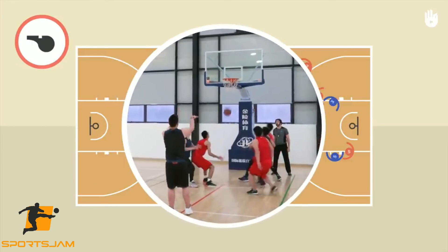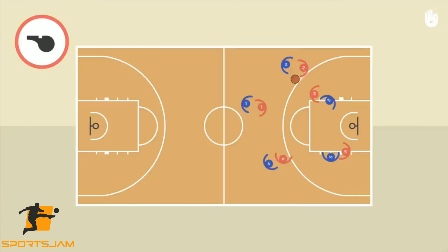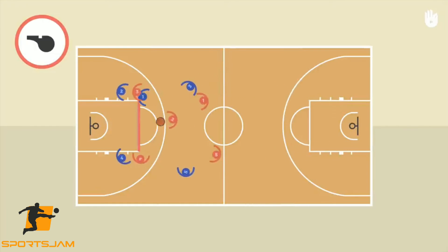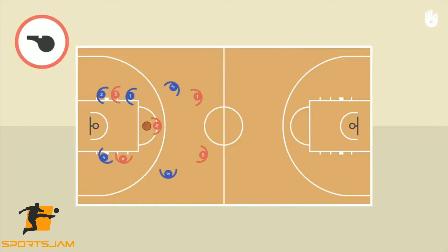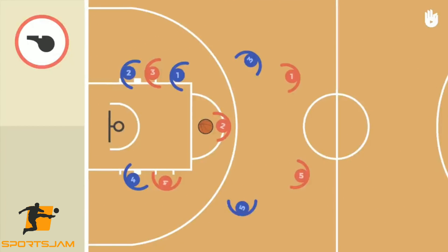Free throws are shot from a line placed near the edge of the key and are worth one point. The key, also called the free throw lane, is the rectangular area drawn beneath both hoops.